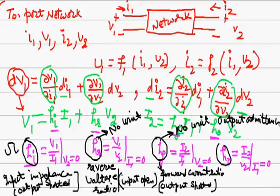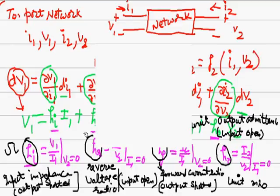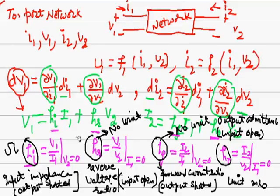These four parameters HI, HR, HF, HO are very important because they are used for defining the circuits, defining common base, common emitter, common collector arrangement of the transistors with these H parameters.